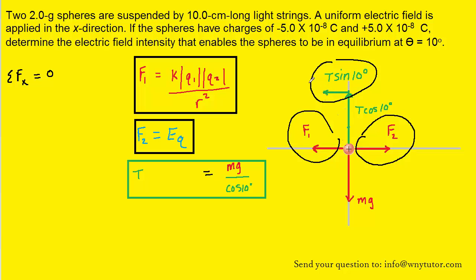Notice that because T sine 10 is pointing to the left, its sign will be negative. Notice also that F1, for the same reason, will be negative. If we add F1 as well as T sine 10 to the other side, we can isolate F2.